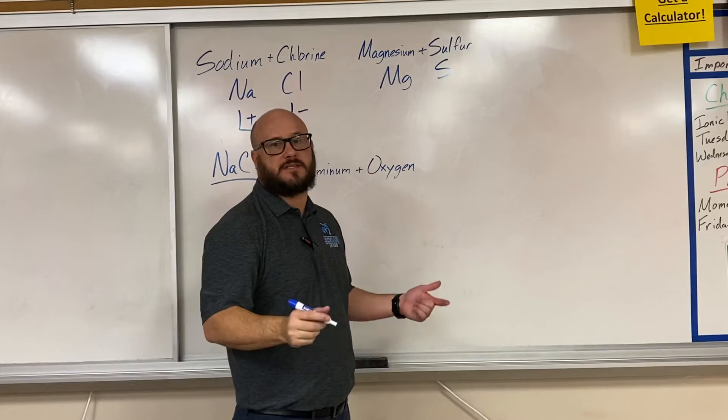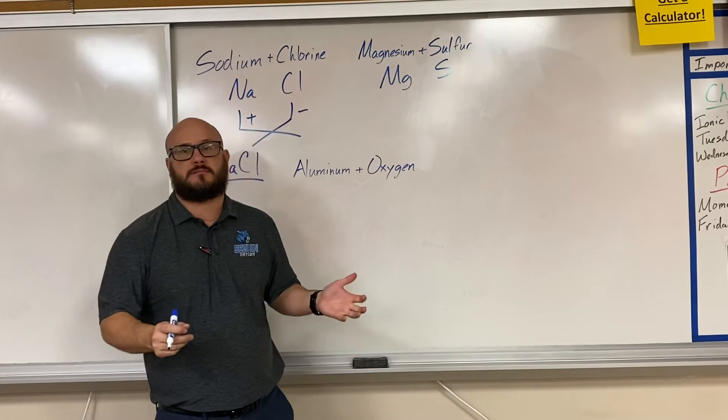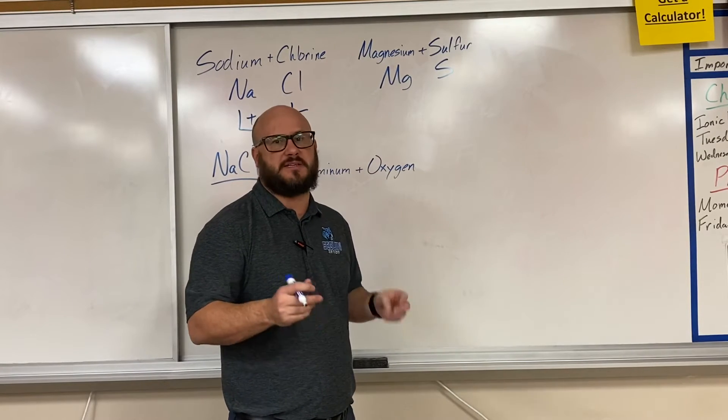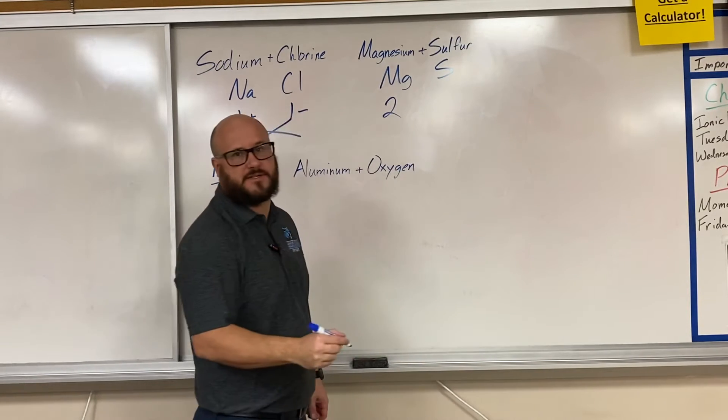Now find their oxidation numbers. Magnesium is in group 2A, so it's going to have 2 valence electrons, but it's still going to be easier to lose 2 than it is to gain 6. So our oxidation number is going to be 2.